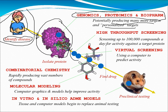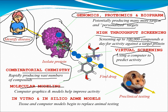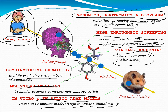The second step would be high-throughput screening — screening up to one million compounds a day for activity against a target protein. Through virtual screening, we can use computers to predict activity and understand what sort of genes are involved. Next is combinational chemistry for rapidly producing vast numbers of compounds. Also, molecular modeling — in vitro and in silico — where computer graphics and models help improve activities. Tissue and computer models have also begun to replace animal testing, which is a massive advancement in understanding diseases and forming drugs against them.